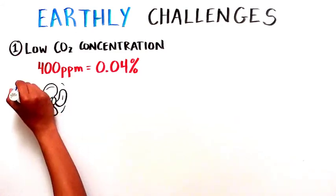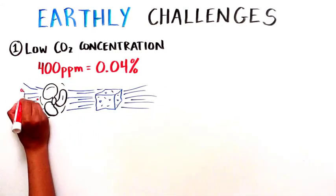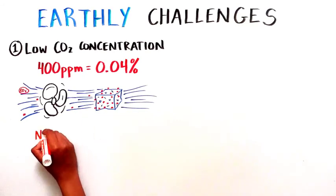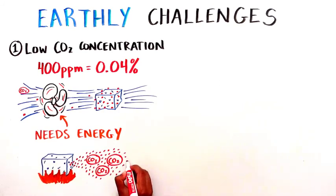Because of this, the carbon capture units need energy to power fans that blow huge volumes of air over the sorbent to maximize carbon dioxide capture. The regeneration step also requires energy to heat up the sorbent to high enough temperatures to release the carbon dioxide.